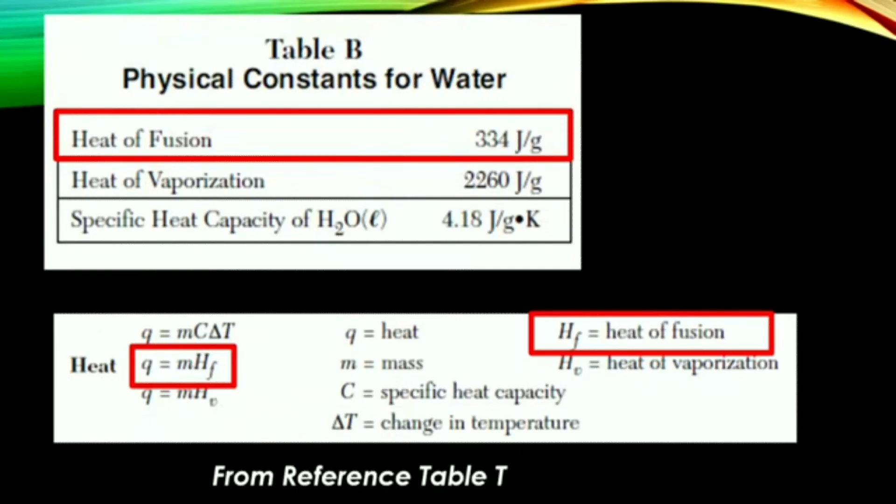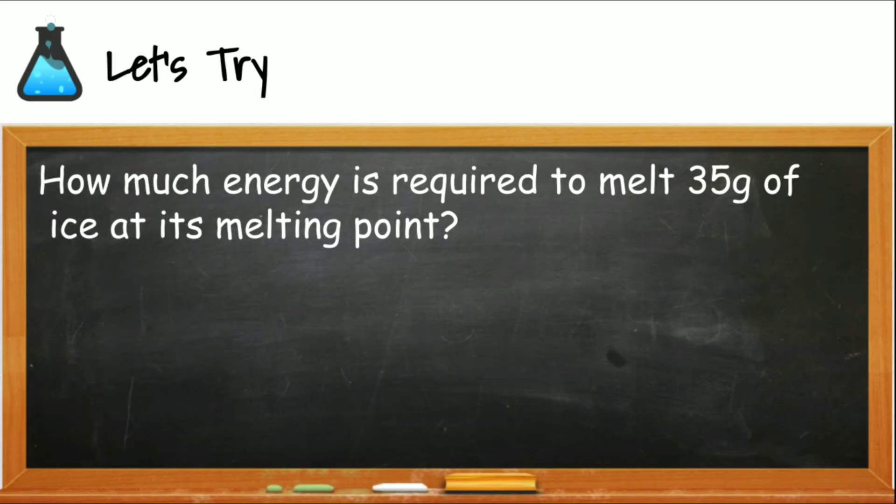Remember that when the temperature is not changing during a phase change between a solid and liquid, we are going to use the heat equation with the heat of fusion from reference table T. You will find the exact quantity for the heat of fusion for water on reference table B. If the substance is not water, they'll have to give you the heat of fusion as this is different for every single substance. So let's see if we can try this problem together.